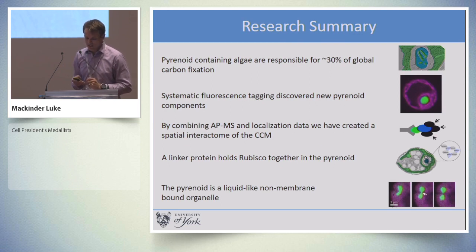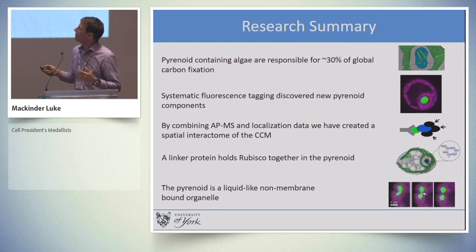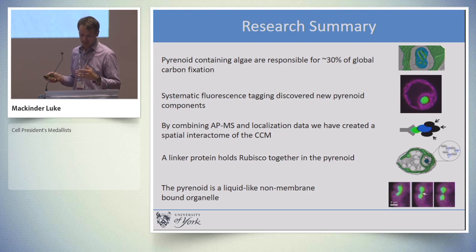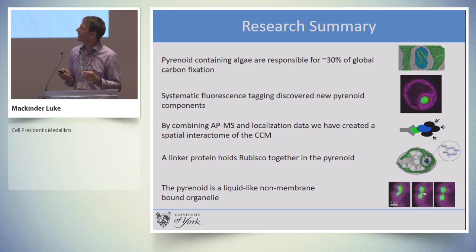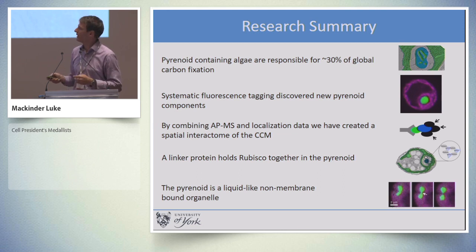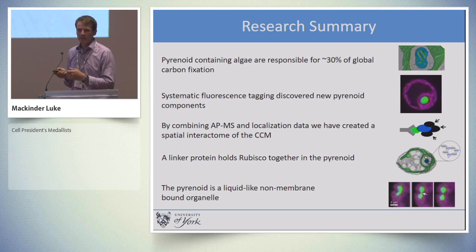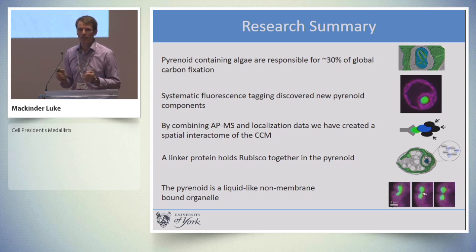To summarize: pyrenoid-containing algae are fundamental for global carbon fixation, fixing approximately 30% of global CO2 fixed by photosynthetic organisms. We developed a systematic fluorescent protein tagging pipeline to discover new pyrenoid components. We combined affinity purification and mass spectrometry data to generate a spatially defined protein-protein interactome of the pyrenoid and CO2 concentrating mechanism. We discovered a linker protein, EPIC1, which holds rubisco together to form the pyrenoid. And finally, the pyrenoid behaves like a liquid-like non-membrane-bound organelle which can rapidly phase-separate from its surrounding medium.